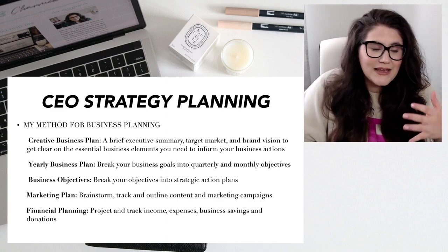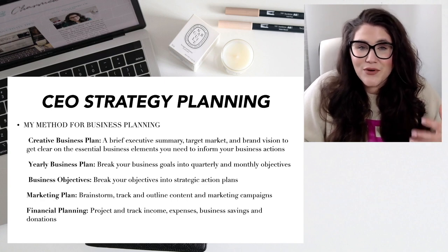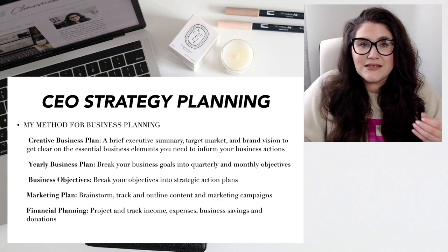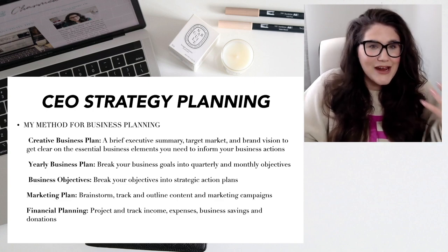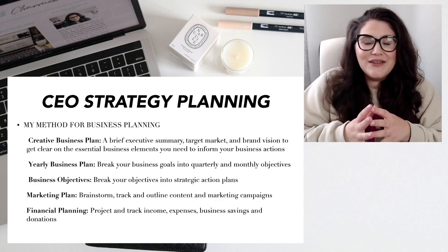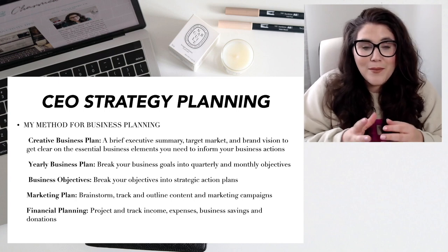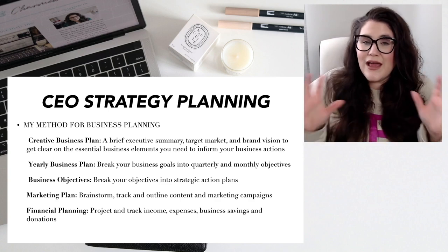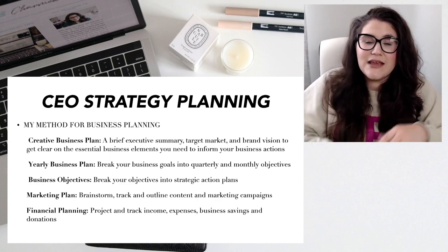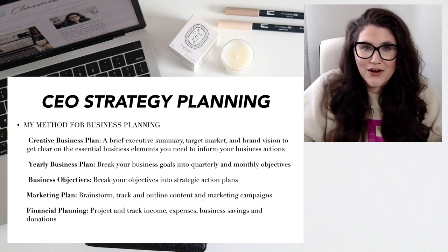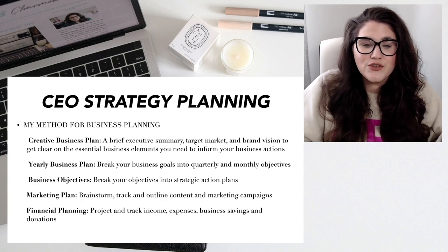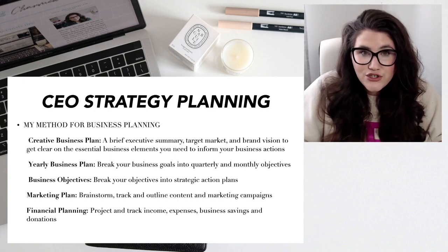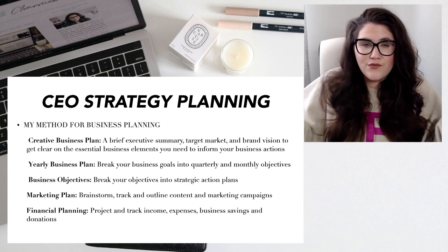Then we have the Marketing Plan. Content marketing is such a big thing to manage when you're working online, especially if you're using multiple platforms. I organize it all with a marketing plan that helps me brainstorm, track, and outline content and marketing campaigns. And finally, financial planning obviously has to be part of any business — even a creative small business. This is where you're going to project and track your income, expenses, business savings, and even donations. That is the overall process for my creative business plan.